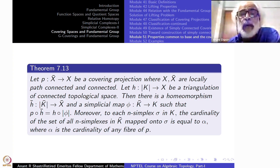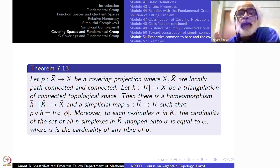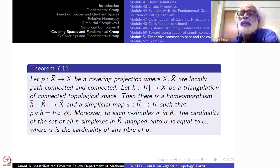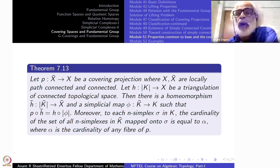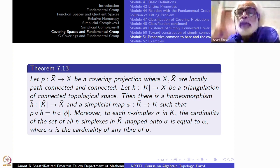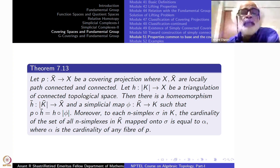So H̄ is not arbitrary — even the triangulating map is constrained. In other words, forgetting about X̄ and X, what we get is |K̄| → |K|. That map φ̄ itself will be a covering projection. Starting with |K|, take any covering; there will be a simplicial structure on this covering such that the original covering map P becomes a simplicial map.